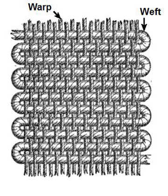Shedding, where the warp threads are separated by raising or lowering healed frames to form a clear space where the pick can pass. Picking, where the weft or pick is propelled across the loom by hand, an air jet, a rapier or a shuttle. Beating up or battening, where the weft is pushed up against the fell of the cloth by the reed.